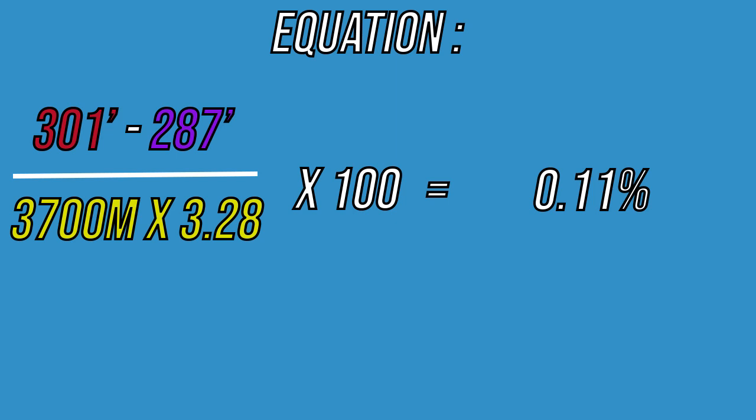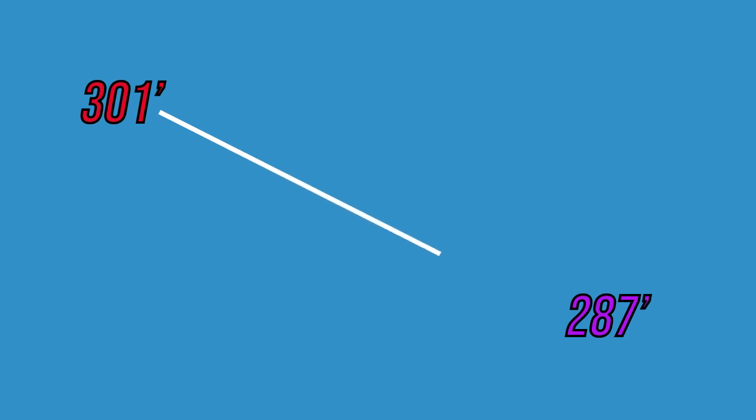But is this a positive or negative slope? It is negative, as we are going from high to low — that is, from 301 feet to 287 feet — in other words runway 24 to 06. But if we had to calculate the slope of runway 06 to 24, the slope would be positive.